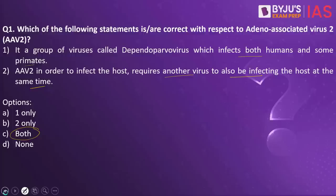AAV2 uses a helper virus in order to replicate inside the human cell, and the most common helper viruses for AAV2 are adenovirus and herpes viruses. These are very important from the preliminary examination point of view. Dependoparovirus is not infectious enough to trigger an immune response, which makes it a good virus to use as a gene therapy tool. This means gene therapy is a possible treatment for a variety of genetic disorders and diseases.